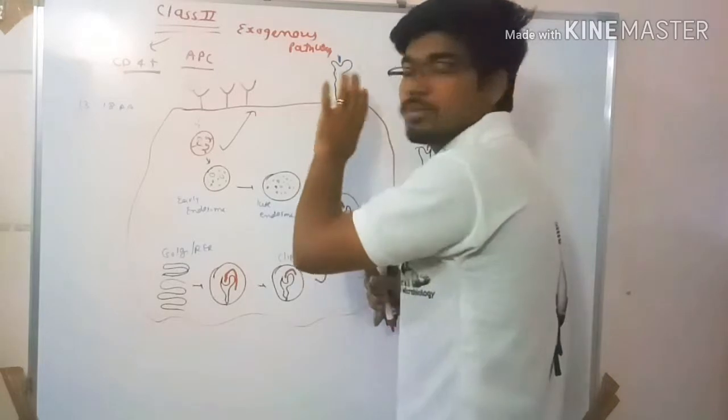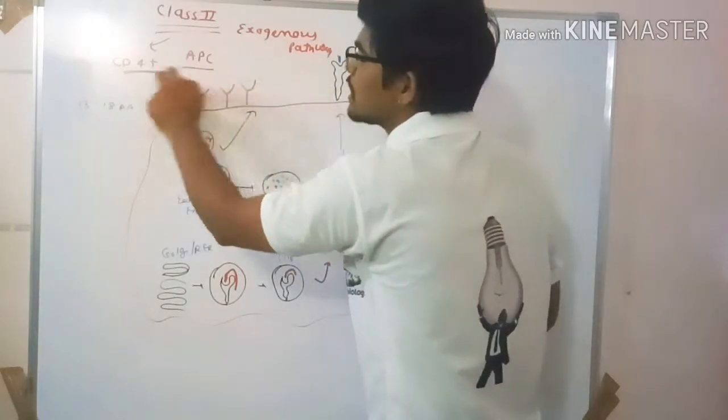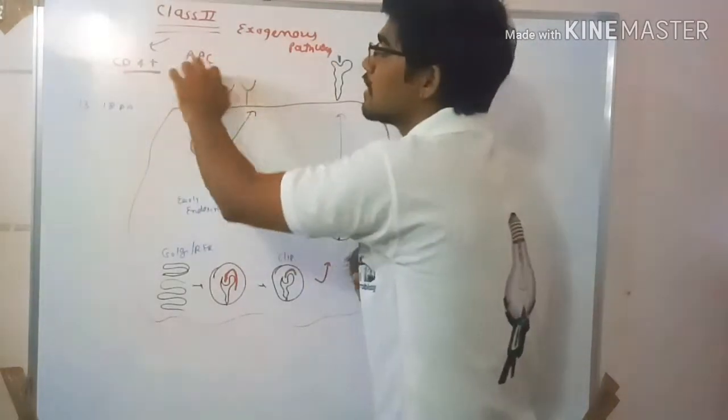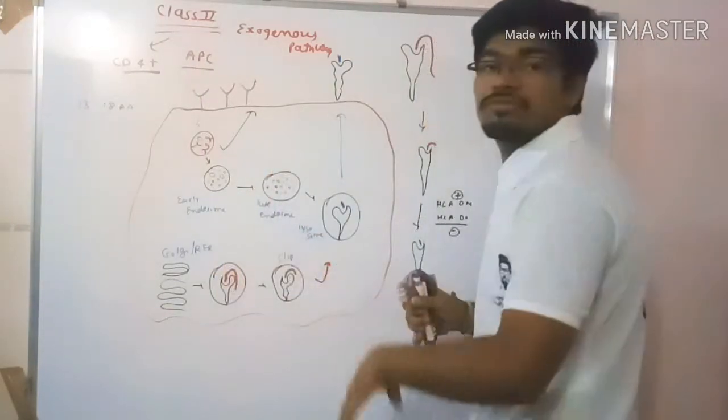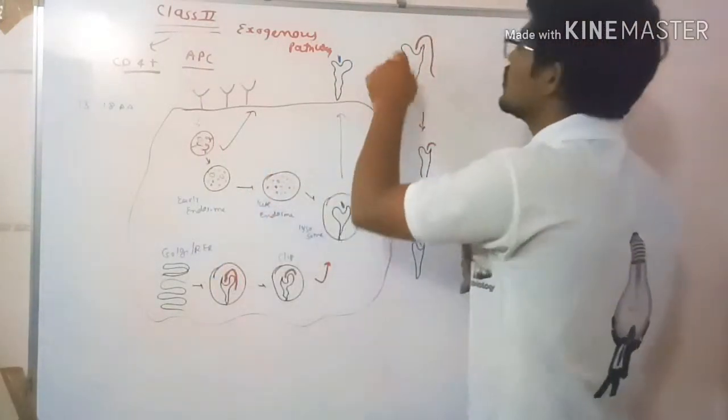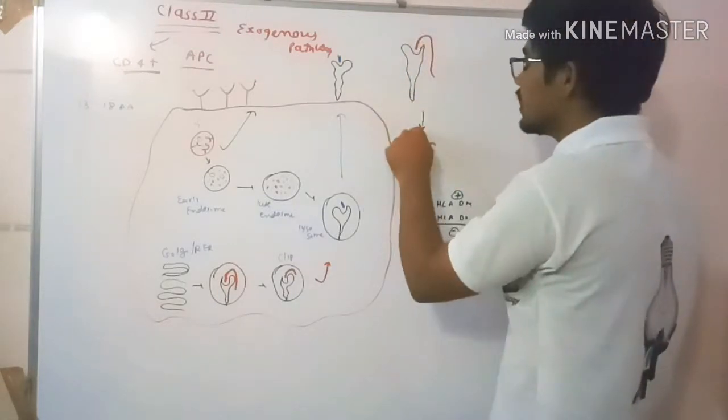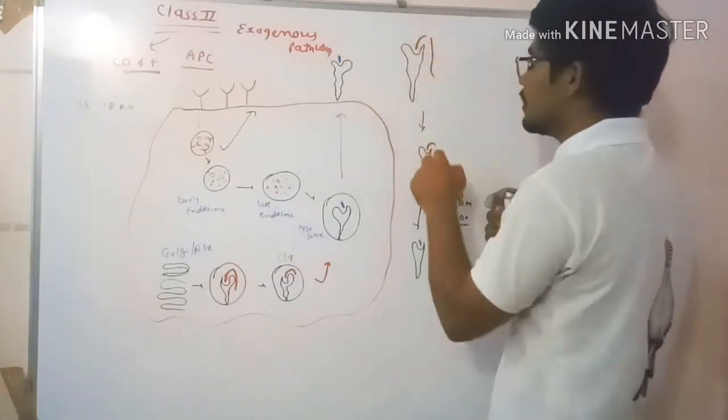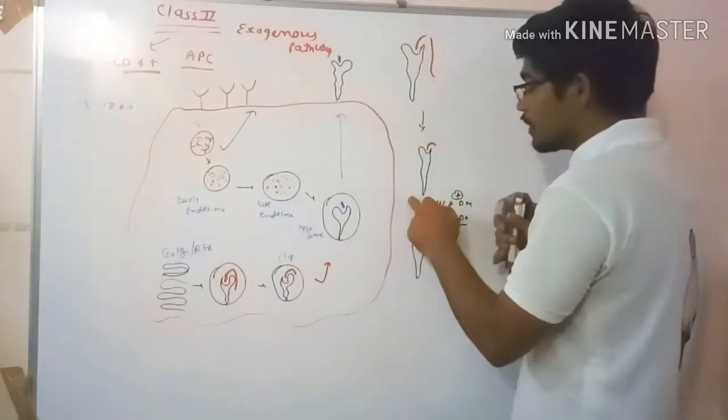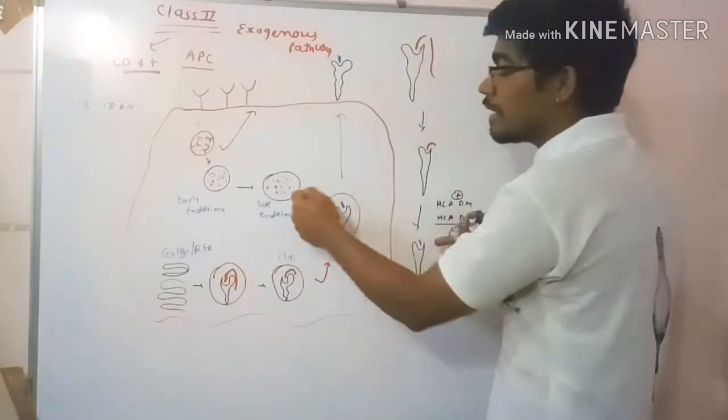Now, how does the invariant chain work and how does it form? First, the invariant chain binds with the class 2 MHC. This is then cleaved and formed into the small clip chain. The exchange between clip and MHC and peptide molecule is facilitated by non-classical MHC molecules.